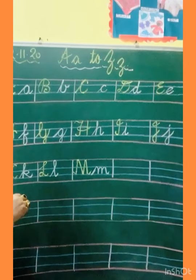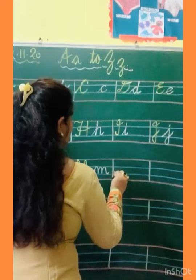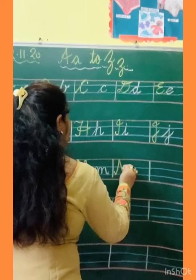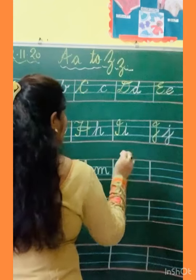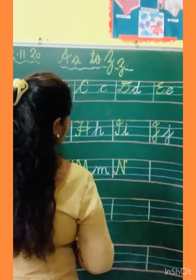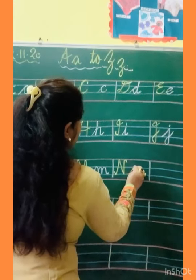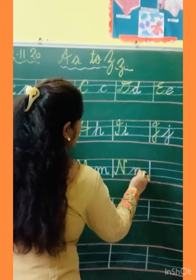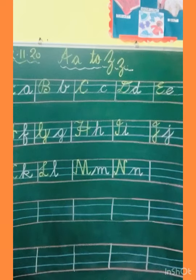After M, N. Capital N: go up, come down, go up, and kick. And small N: slanting, turn, go up, come down, and kick. This is small N.